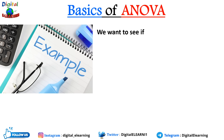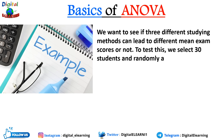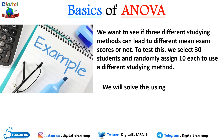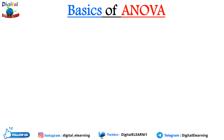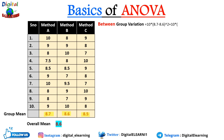Let's take an example. We want to see if three different study methods lead to different mean exam scores. We select 30 students and randomly assign 10 each to use a different studying method. For method A, B, and C, the group means are 8.7, 8.6, and 8.5 respectively, and the overall mean is the average of these, which comes to 8.6.